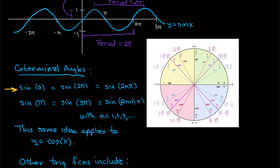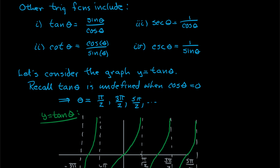In both examples I talked about sine, but this same idea works for cosine as well. There are several other trig functions you need to be familiar with. Tangent is sine divided by cosine. Cotangent is the reciprocal of tangent — cosine over sine. Secant is the reciprocal of cosine, and cosecant is the reciprocal of sine. So you wind up with a total of six trig functions: sine, cosine, tangent, cotangent, secant, and cosecant.